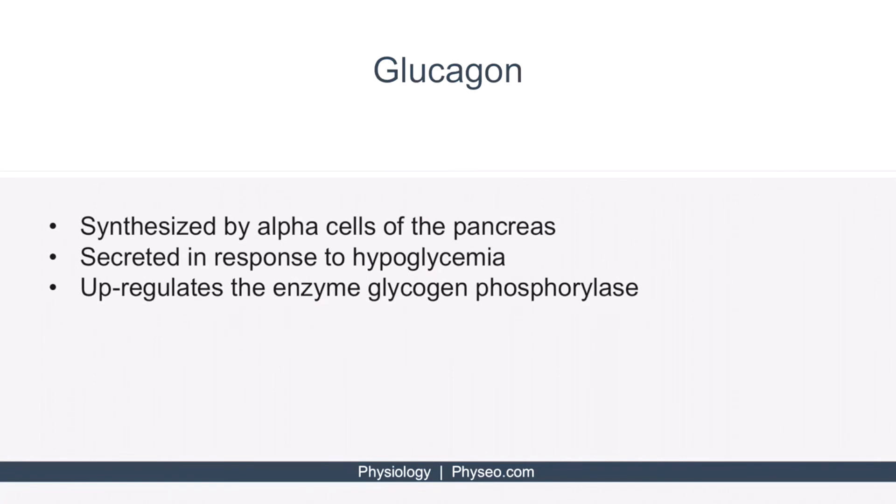As I showed earlier, glucagon is synthesized by alpha cells of the pancreas. Unlike insulin, glucagon is secreted when blood glucose concentrations get low or in response to hypoglycemia. Additionally, glucagon upregulates the enzyme glycogen phosphorylase in skeletal muscle and hepatic tissues.